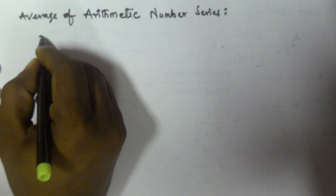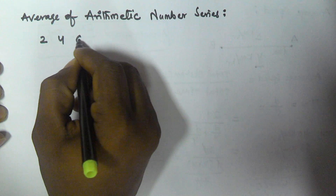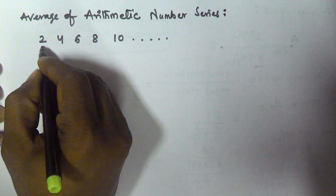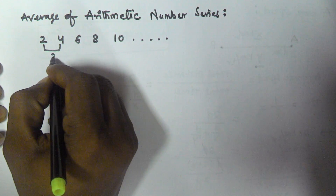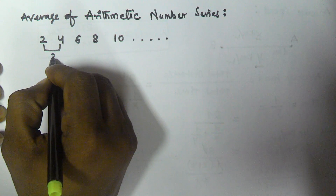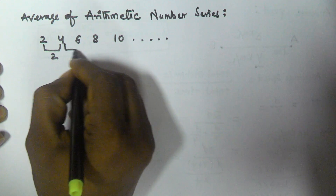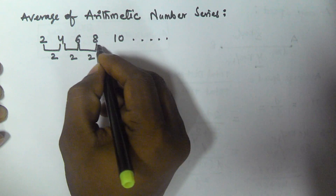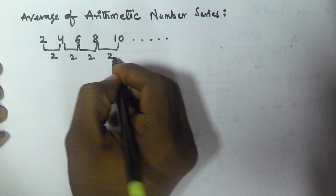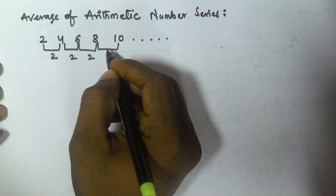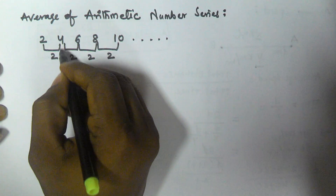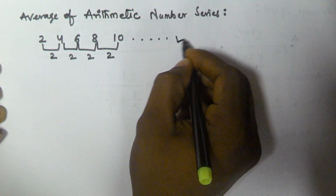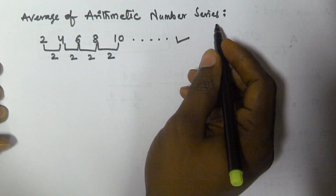Let's take one series: 2, 4, 6, 8, 10 and so on. What is the difference between 4 and 2? That is 2. And 4 and 6, the difference is 2. 6 and 8, the difference is 2. 8 and 10, the difference is 2. So the difference between two consecutive numbers is always going to be constant, and this series is an arithmetic number series.